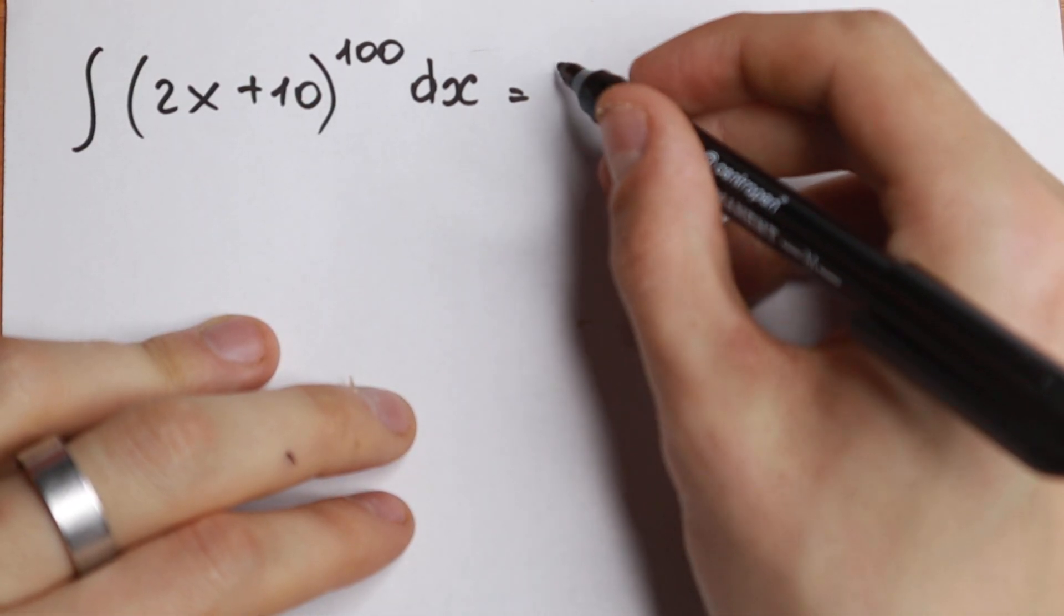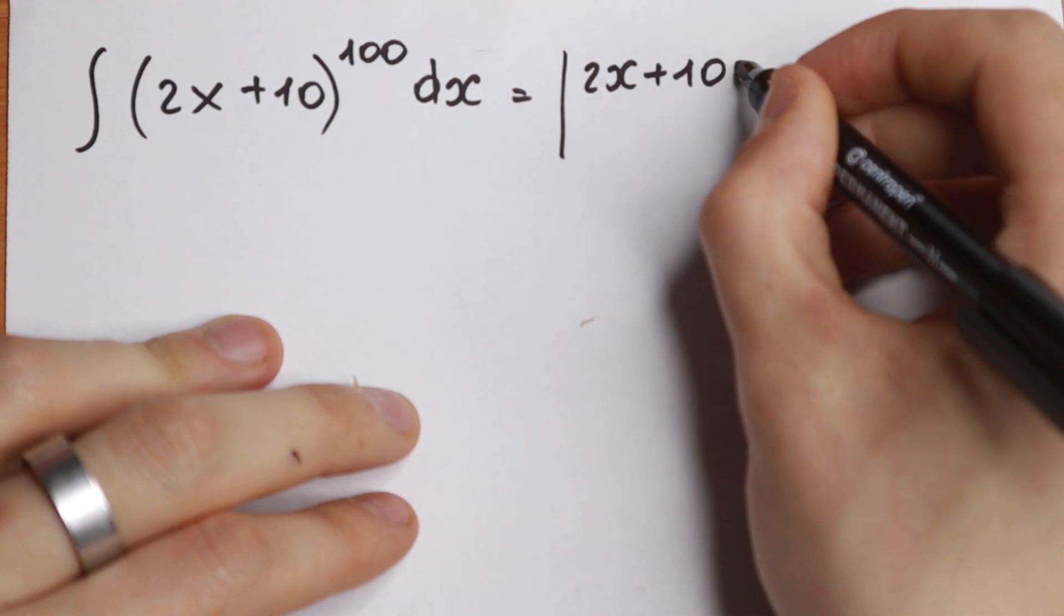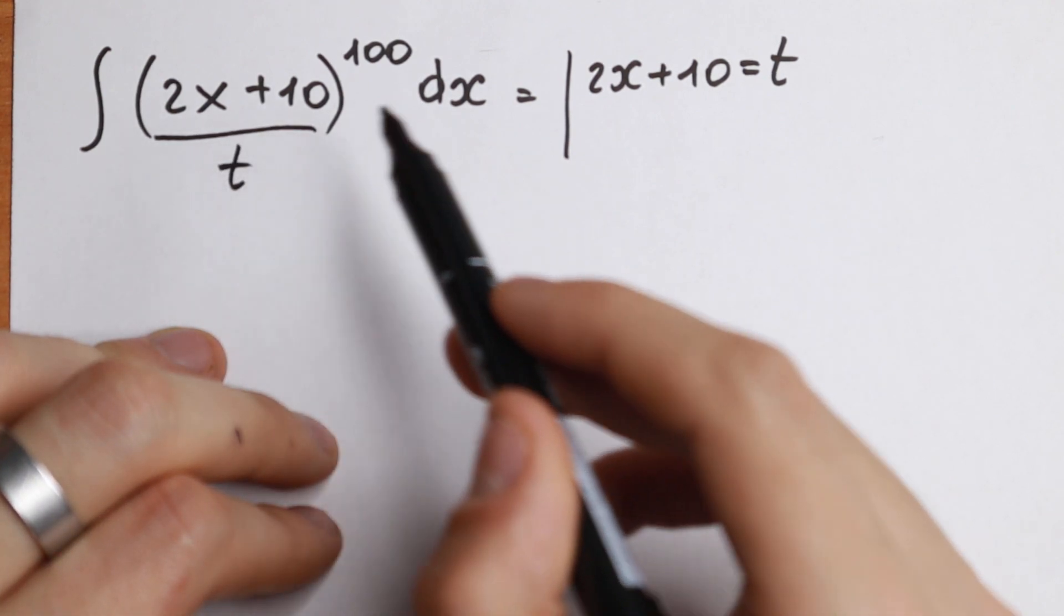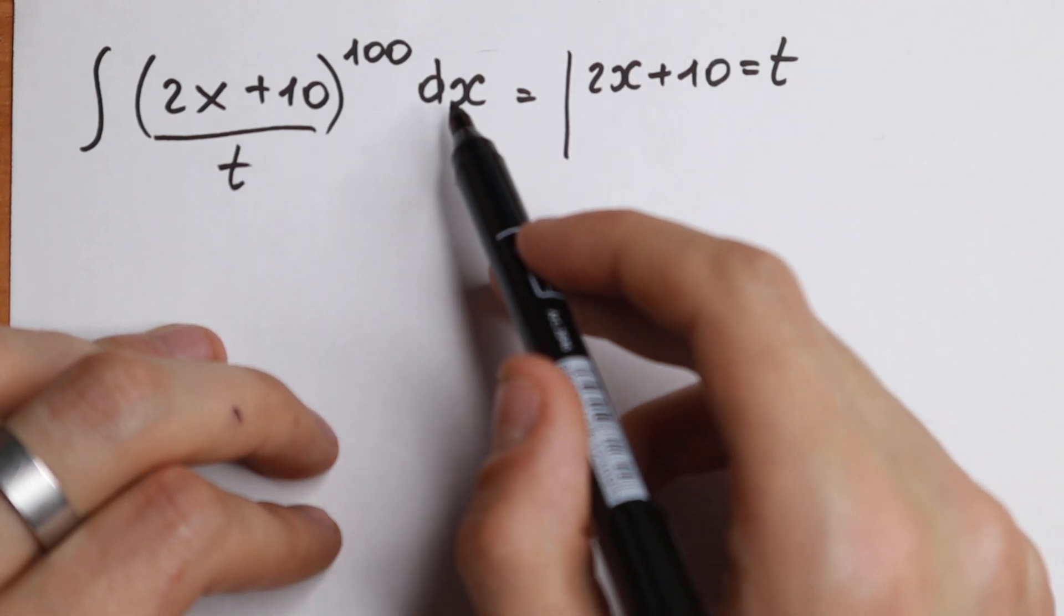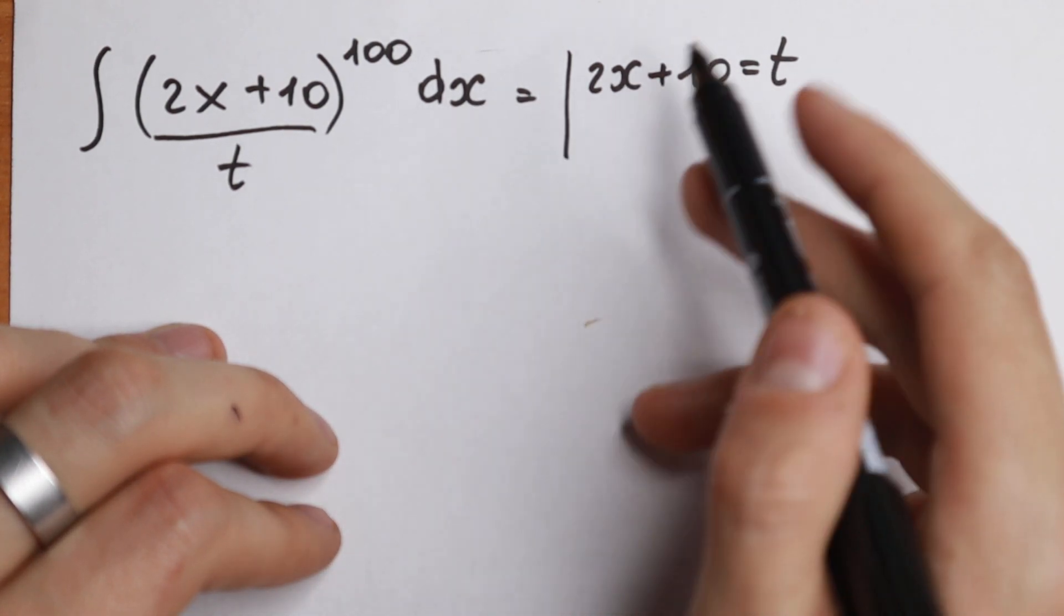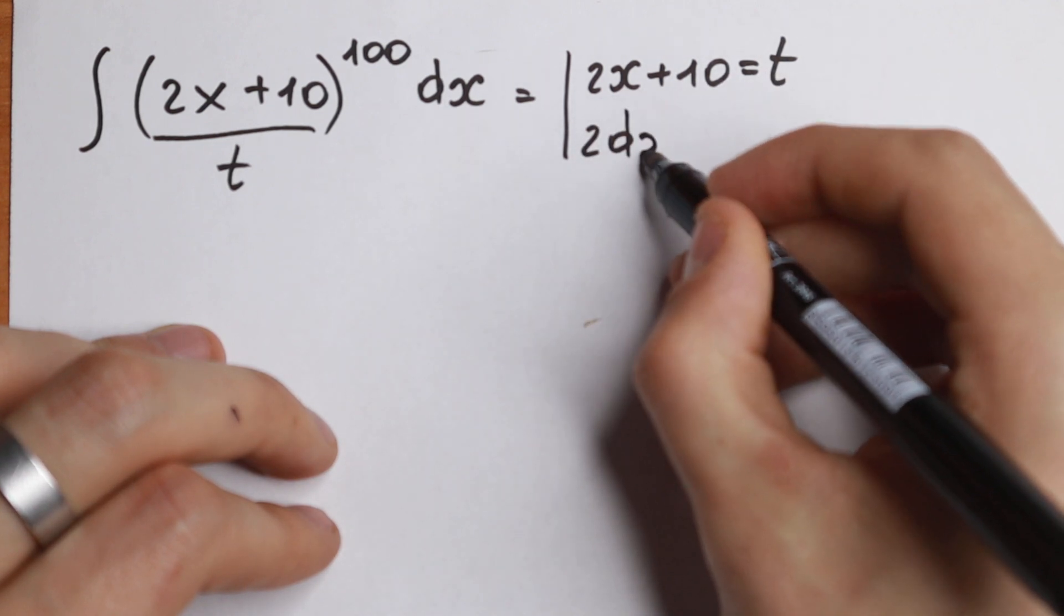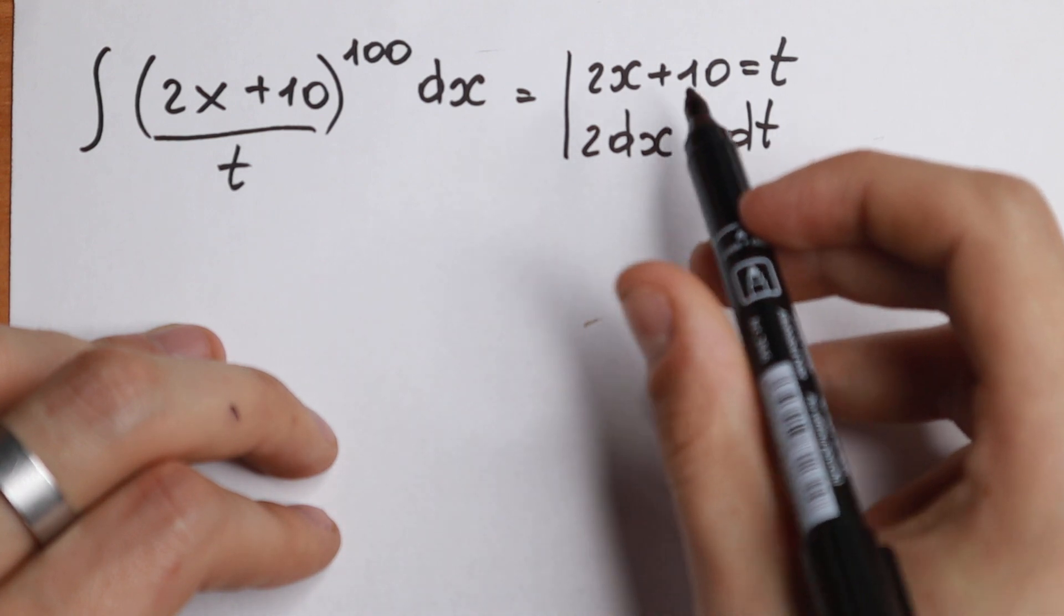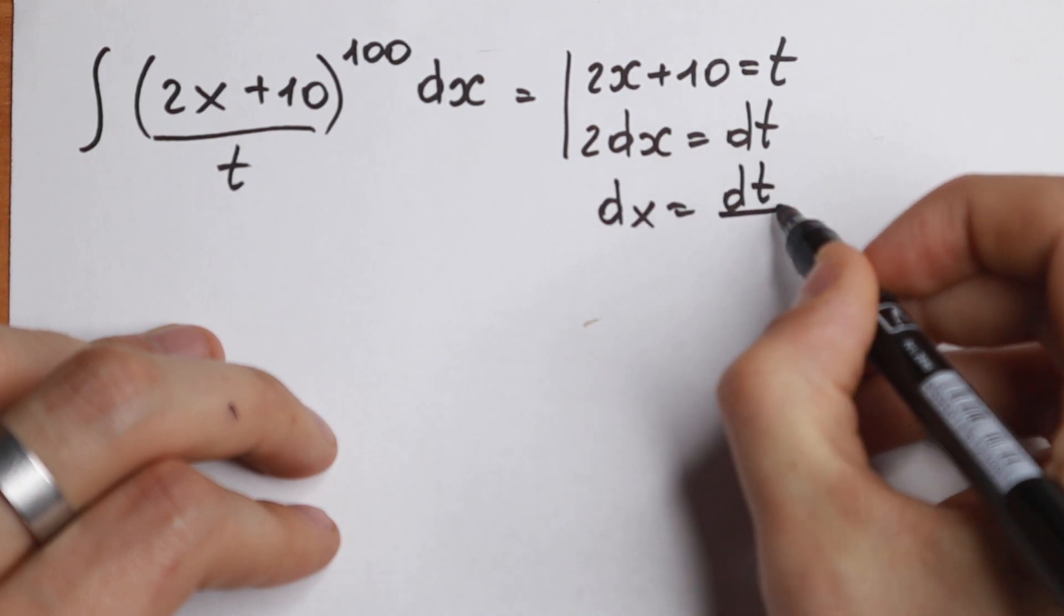So first of all, we can write this: 2x plus 10 will be our t. So this expression will be our t. In this parenthesis, this will be our t. And when this is our t, we need to find a substitution with this dx. So finding derivative from both sides, 2 dx equal to dt, and if we divide both parts by 2, we will have that dx equal to dt over 2.